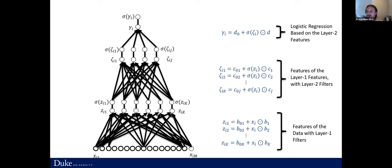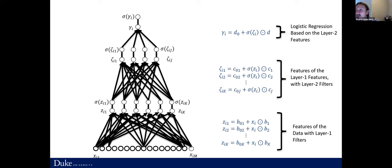Another question: besides logistic regression, what other shallow learning models could be used in deep learning? The reality is that we are not restricted to logistic regression — other linear models can be used. The logistic function sigma can be replaced by many other functions, and the linear model below can also be replaced. We can use more sophisticated mechanisms like convolutional filters to learn more complex relationships. Also: is a three-layer model necessarily more powerful than a two-layer model? Not necessarily, and I will answer that question in a couple of slides. Adding more layers does not always result in better predictions.